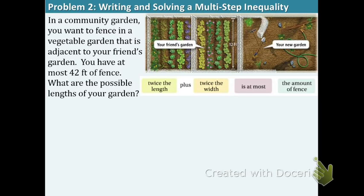Let's underline the important information. Adjacent - I'm not sure if you've heard that word before. Adjacent means right next to. So as you can see in the picture of the gardens, your garden is right next to your friend's garden.